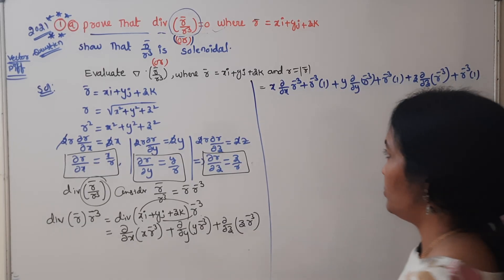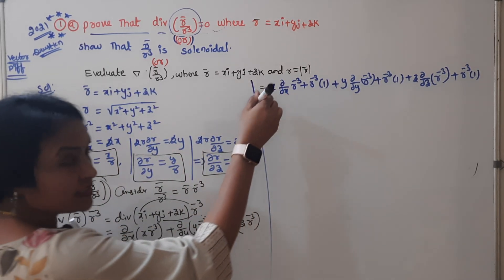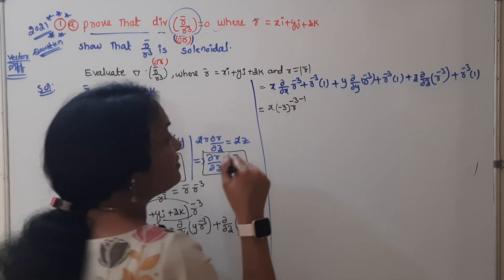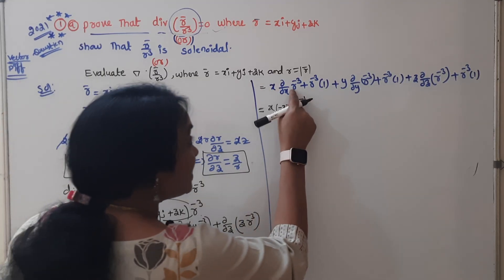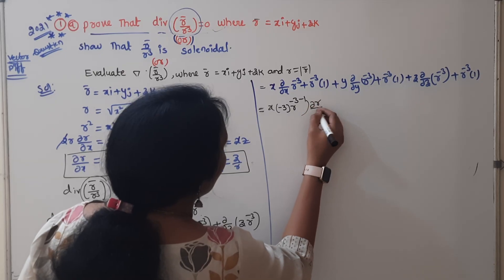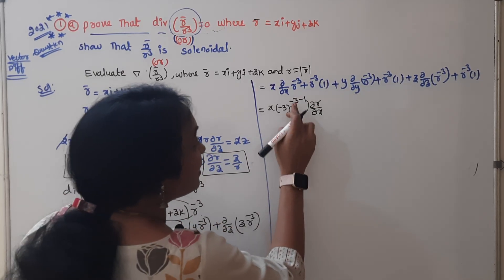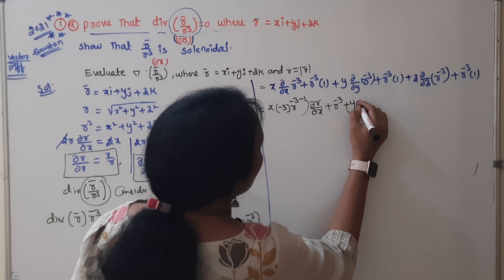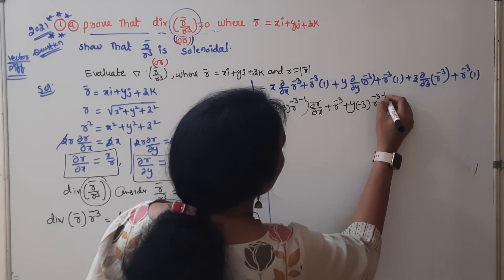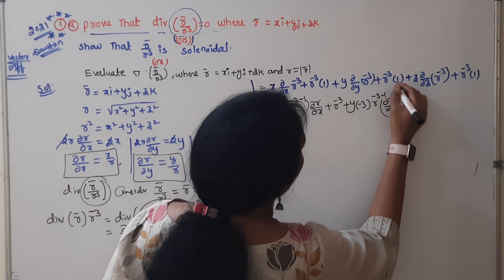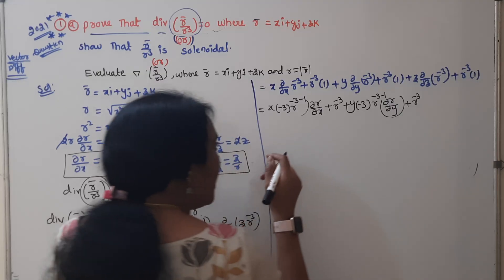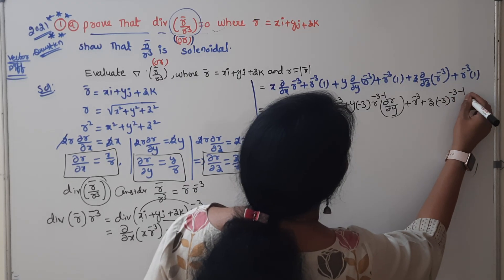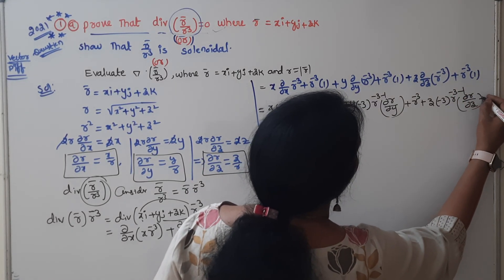Now differentiating r^(-3): using chain rule, ∂/∂x(r^(-3)) = -3 · r^(-4) · (∂r/∂x). We already know ∂r/∂x = x/r, so this gives -3x · r^(-4) · (x/r) = -3x² · r^(-5). Same for y: ∂/∂y gives -3y · r^(-4) · (y/r) = -3y² · r^(-5). And for z: -3z² · r^(-5). The remaining terms give r^(-3) each.